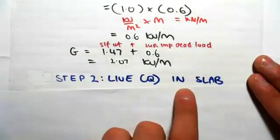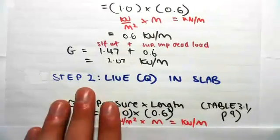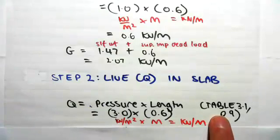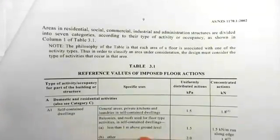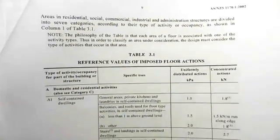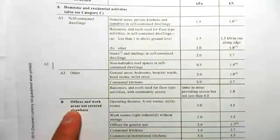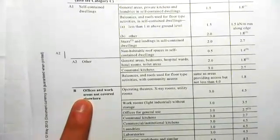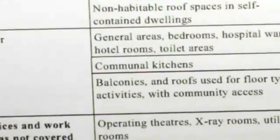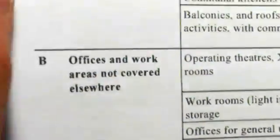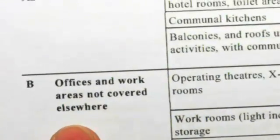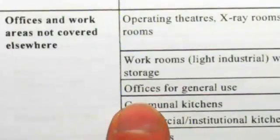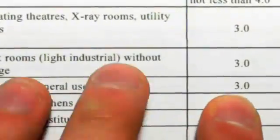Step 2 is finding the live load in the slab. Because this is a general office, we go to Table 3.1 on page 9 of AS1170.1. Under category B — offices and work areas not covered elsewhere — we find 'offices for general use,' which gives a uniformly distributed action of 3 kPa.